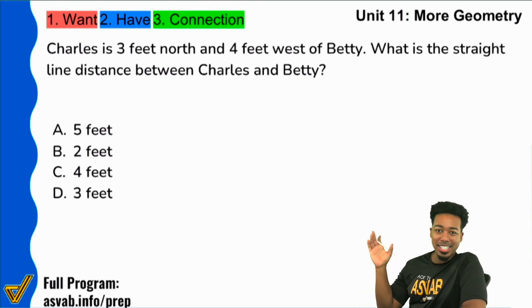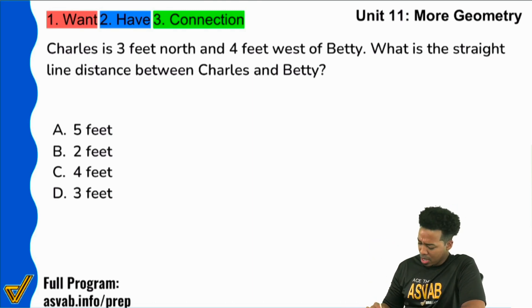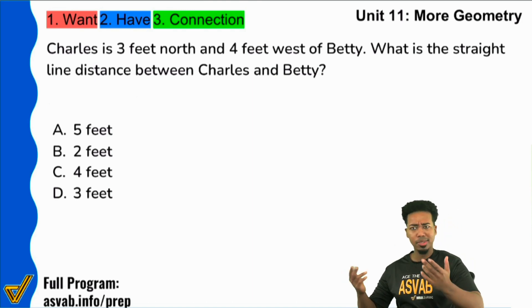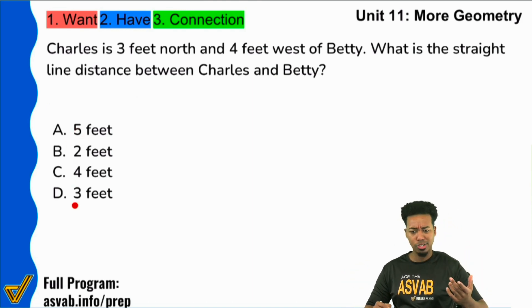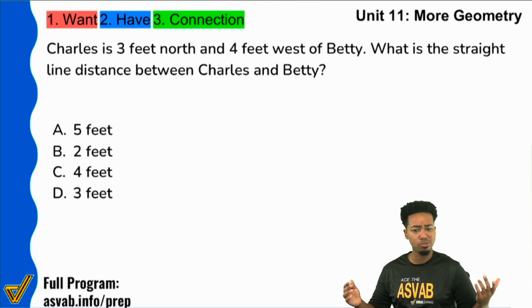But this is how easy this problem can be. At first it might seem complicated. You might be looking at this, you might be saying, okay, what's the straight line distance? Three feet, four feet. Okay, add them together, that's seven. Where's seven? I don't see seven on the answer choices.